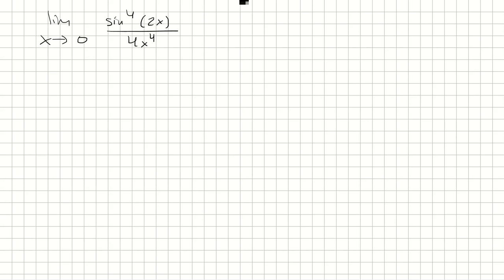So the way I think about this is we want to factor out the exponent. So ideally, we want to write it like this: sine of 2x over 2x.